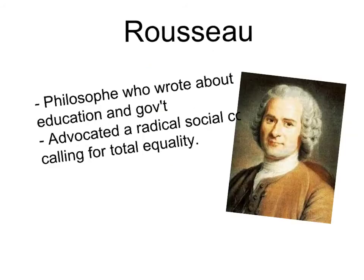Jean-Jacques Rousseau was one of the philosophers of the latter part of the 18th century. He wrote much about education and government, advocating an educational system that focused more on experience than book learning at a young age. He also advocated a radical social contract — much more so than anything Voltaire, Locke, or anyone else had called for — demanding total equality to be designed into the system of government and society. He would have a big impact on the French Revolution and later philosophers and revolutionaries arguing for a more equal society in the 19th century.